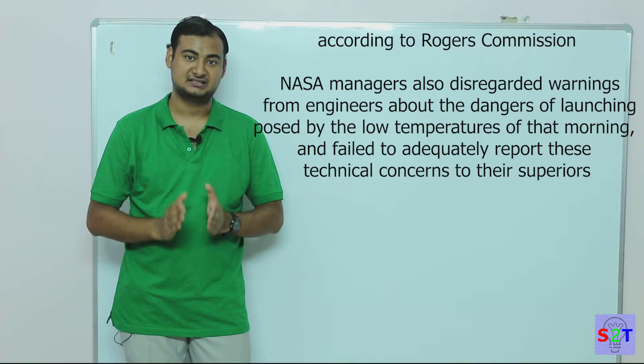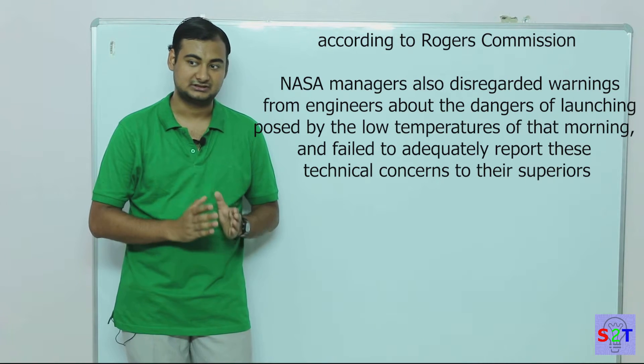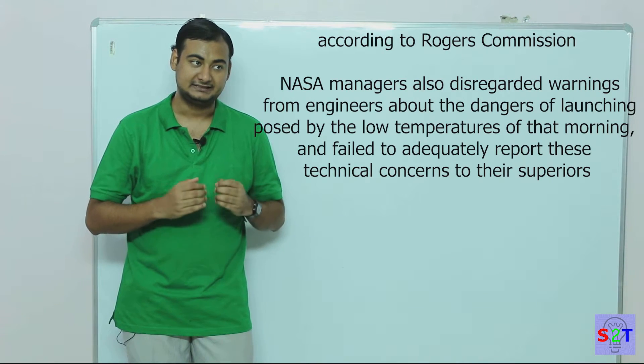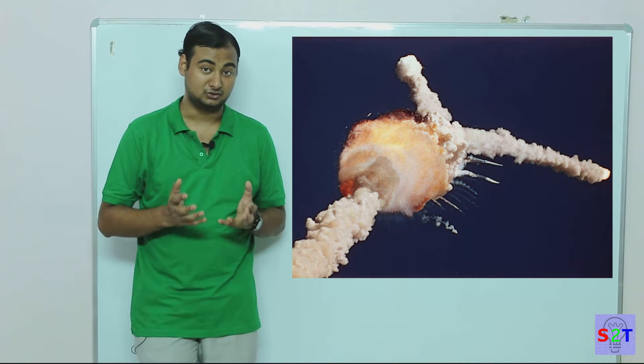happened solely because NASA ignored safety protocol. They received a phone call that the solid booster would blow up if they fired it, and they still launched it. Kaboom—they knowingly killed seven people in the first shuttle disaster.